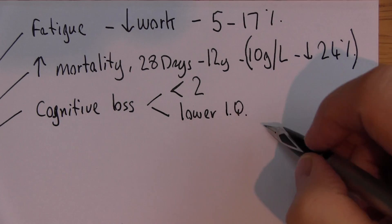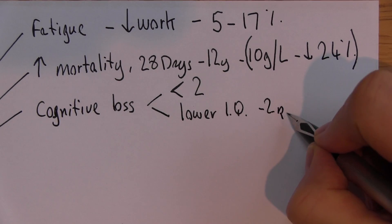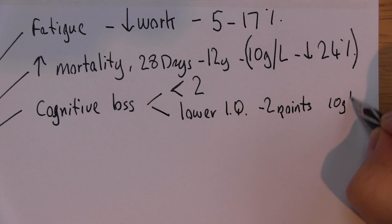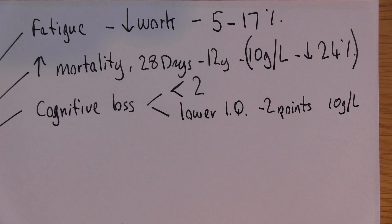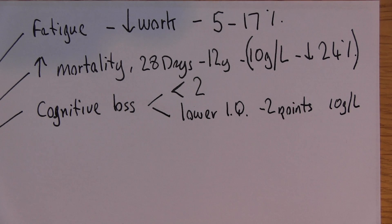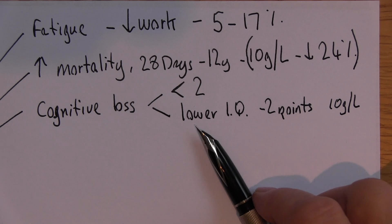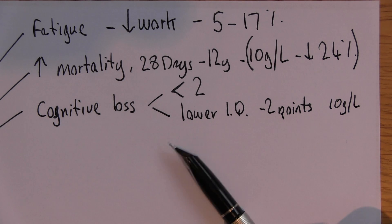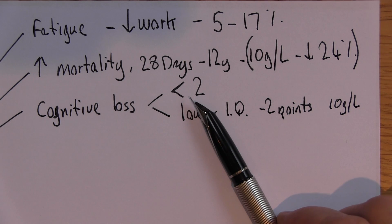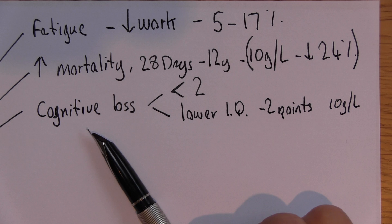And again, studies have quantified this - there's lower IQ, and that works out at two points per 10 grams per liter of hemoglobin. So if you can increase hemoglobin levels back towards normal, that will result in higher IQs. But if you don't intervene before the age of two, then that can be a permanent loss of intelligence and cognitive ability.